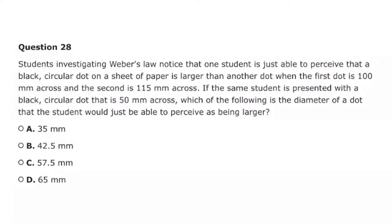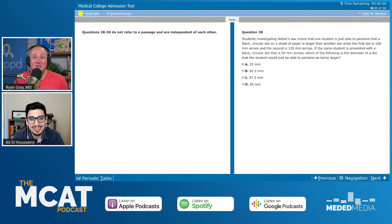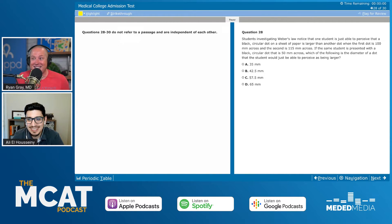Starting with question 28. Students investigating Weber's Law noticed that one student is just able to perceive that a black circular dot on a sheet of paper is larger than another dot — when the first dot is 100 millimeters across and the second is 115 millimeters across. If the same student is presented with a dot that is 50 millimeters across, which is the diameter of a dot the student would just be able to perceive as larger? I have no idea what Weber's Law is, but one is 100 and one is 115, so it's 15% larger. If I take 50 millimeters and find 15% larger, I'd get 65 — so answer choice D is 65.